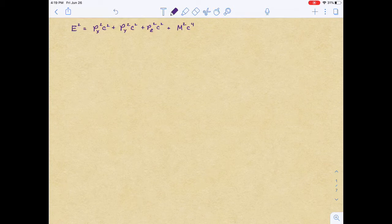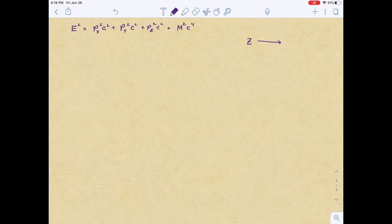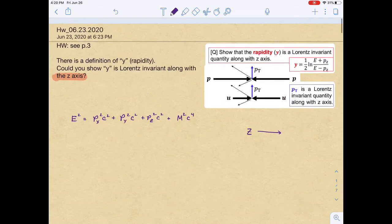We want to look at this particle from a lab frame which will be Lorentz boosted in the z-axis, so we will look into the rapidity with respect to this.